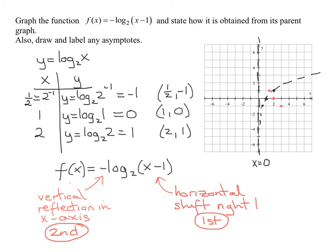So the last thing we have to figure out is what happens to my vertical asymptote of x equals 0. So if I take a point here, I move it to the right, and then I reflect it across the x-axis, it's going to be up here.